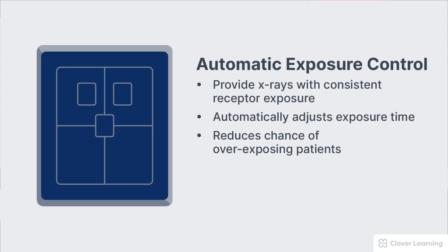AECs were developed to provide x-ray images with consistent receptor exposure, regardless of the patient size or tissue density. The AEC works by controlling the exposure time. The machine automatically adjusts the exposure time up or down to ensure the detector receives the correct receptor exposure. In other words, AEC takes the guessing out of setting the mAs, because the time and the total mAs is determined by the AEC.